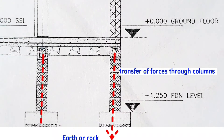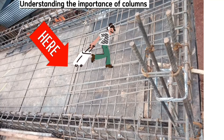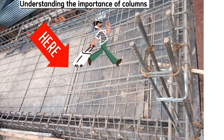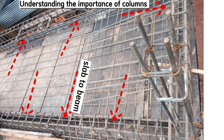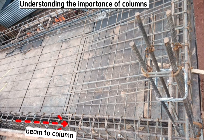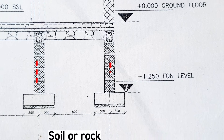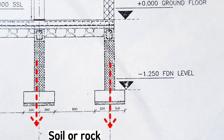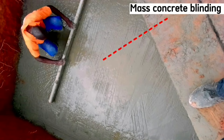For example, if a person is standing or walking on this slab, the person's live load is transferred from the slab to the beam, then from the beam to the columns, then from the columns to the bases or pads, and finally the loading is transferred into the soil or rock.